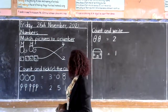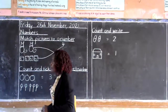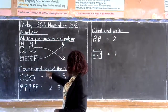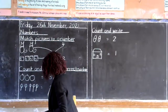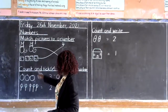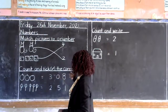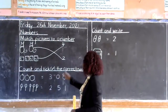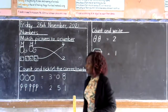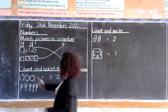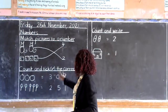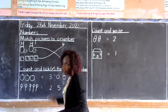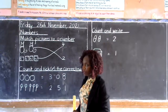Now we have also another activity under numbers and it says count and tick. This is how we are supposed to tick. Count and tick the correct number. We are going to count these objects and get the correct number, and we tick that correct number.